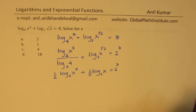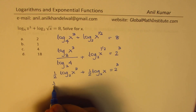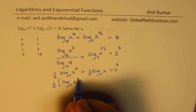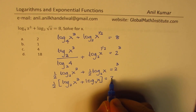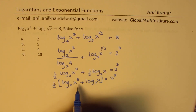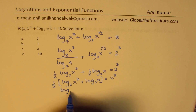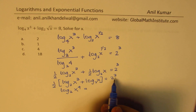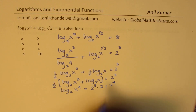Since one-half is common, we multiply through by 2, and we get log to the base 2 of x cubed plus log to the base 2 of x equals 2 cubed. We can combine the terms inside and get log to the base 2 of x to the power of 4 equals 2 to the power of 3 times 2, which is 2 to the power of 4.